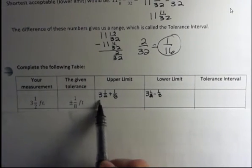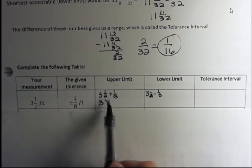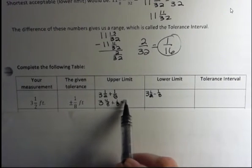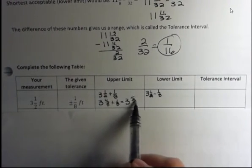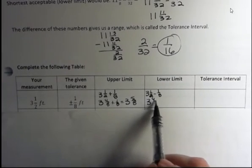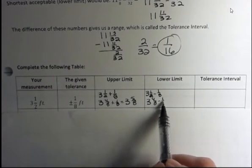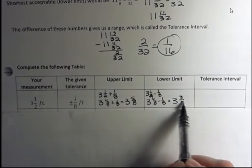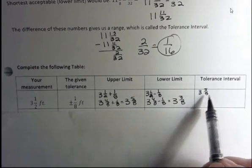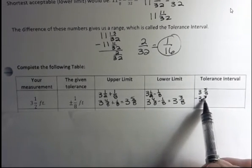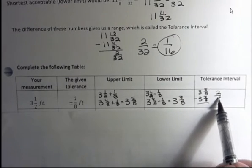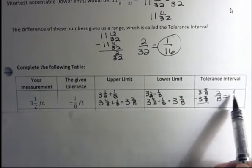So 3½, well, that's actually 4/8ths, right? That's something we want to be able to do is build and reduce fractions. And then we have ⅛, and so that gives us 3⅝. Now I'm going to take the same thing, 3 4/8ths, but I'm going to subtract an eighth and I'm going to get 3⅜. My tolerance interval is 3⅝ minus 3⅜, and that's going to give me 5 minus 3, which is 2/8ths. But what is 2/8ths reduced to? It reduces to ¼.